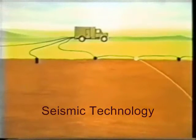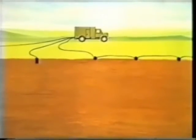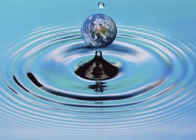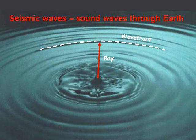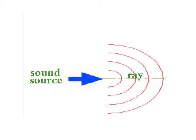To understand the fundamentals of seismic technology, we need to understand the basic scientific principles of sound waves. When you drop a rock into water, a wave is created. It spreads out in a circular pattern, called the wave front. From the source, we draw a line that serves as a right angle to the wave — we call this hypothetical line a ray. It allows us to give direction to the wave front.